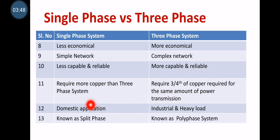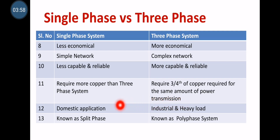Single-phase system is usually used in domestic applications — in your house, you are using 230 volts. Three-phase system is implemented for industrial and heavy load applications. Single-phase system is also known as split-phase system, whereas three-phase system is known as poly-phase system. These are the few differences.